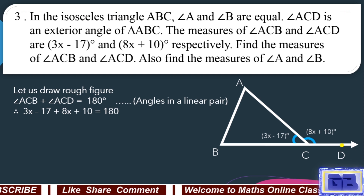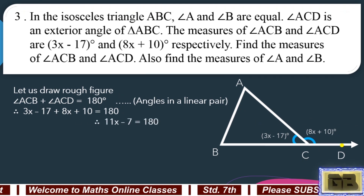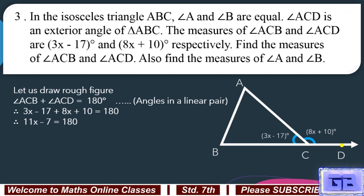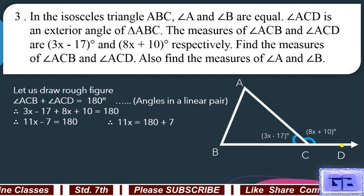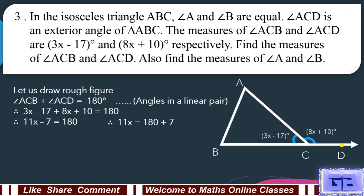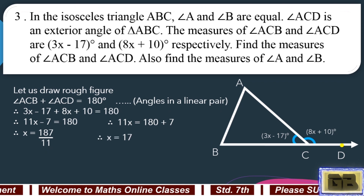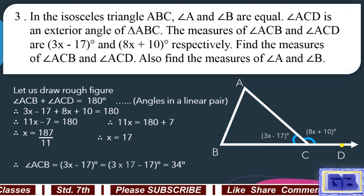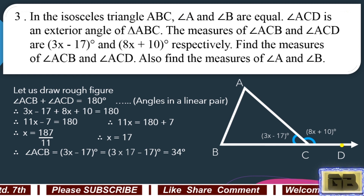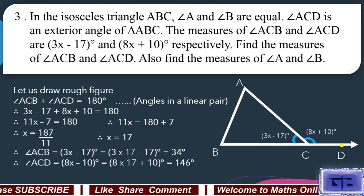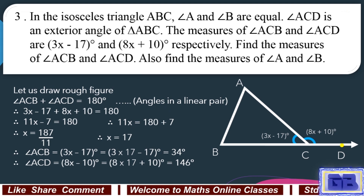Therefore, (3x minus 17) plus (8x plus 10) equals 180. Therefore, 11x minus 7 equals 180. Shifting 7 to the other side, 11x equals 180 plus 7, giving 11x equals 187, so x equals 17. Therefore, angle ACB equals 3x minus 17 equals 3 into 17 minus 17 equals 34 degrees. And angle ACD equals 8x plus 10 equals 8 into 17 plus 10 equals 146 degrees.